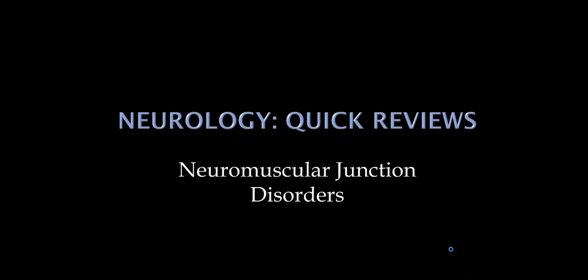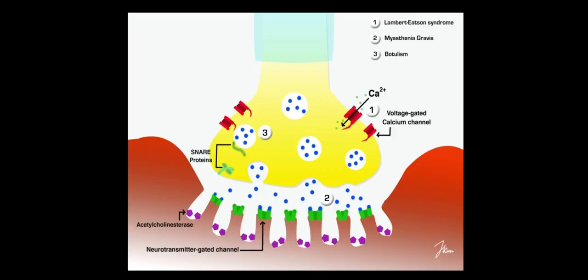Our next topic is the neuromuscular junction. We'll do a quick review of normal physiology of the neuromuscular junction and then talk about common conditions that affect it. At a normal neuromuscular junction, an action potential travels down the nerve and stimulates voltage-gated calcium channels. The entry of calcium is the key event for normal release of acetylcholine at the neuromuscular junction.